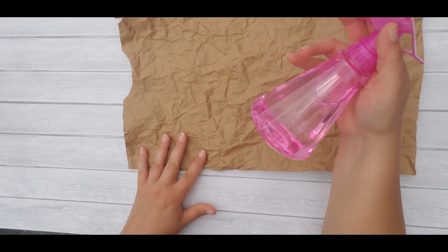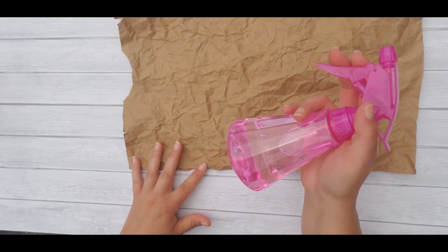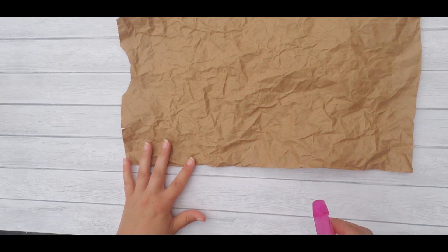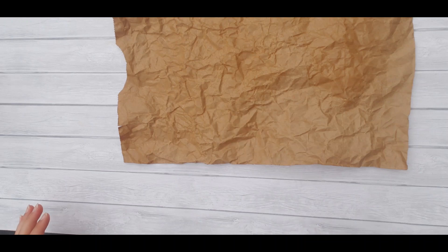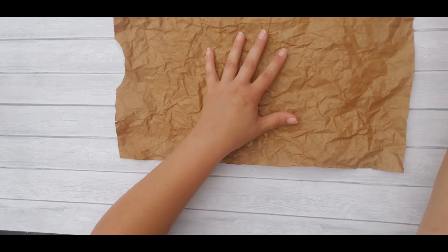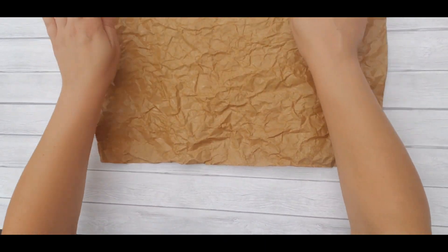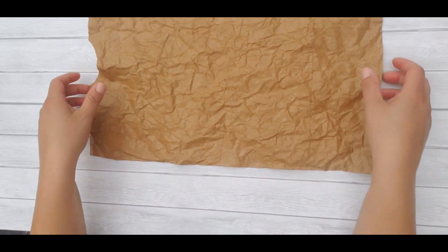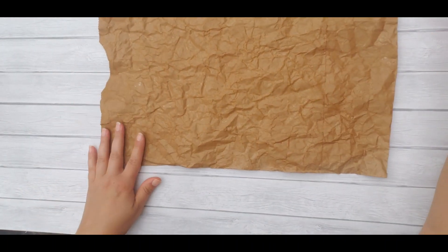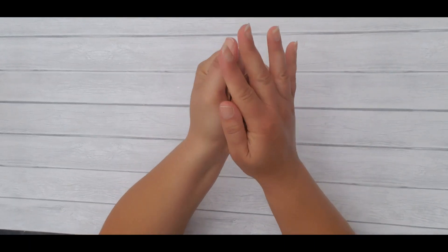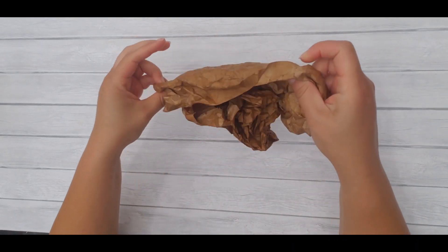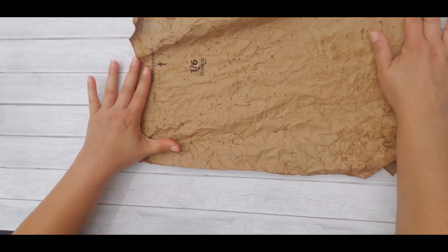Next I'm bringing in my water bottle. This is just regular water and I'm going to spritz my paper. Just spritzing it lightly. I'm going to wrinkle it yet again. And I will open that up.